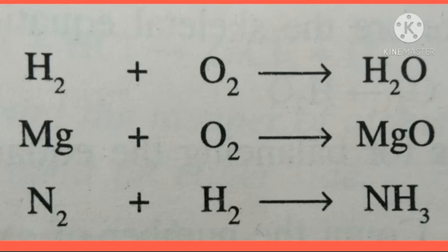Similarly, hydrogen and oxygen reacting to form water, and nitrogen and hydrogen reacting to form ammonia gas, are also examples of skeletal equations where the total number of atoms on both sides are not equal. Chemical equations must always be balanced to follow the law of conservation of mass — matter can neither be created nor destroyed, only changed from one form to another. This completes our Part 2. Thank you.